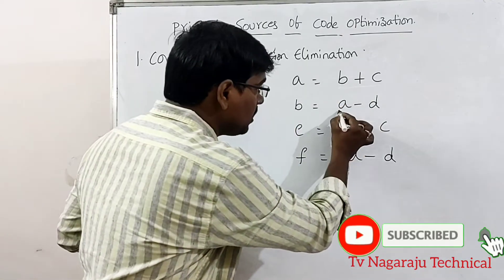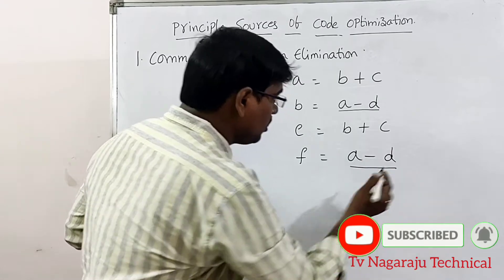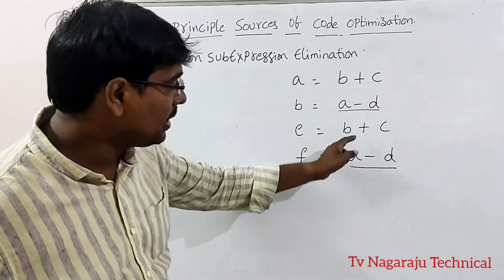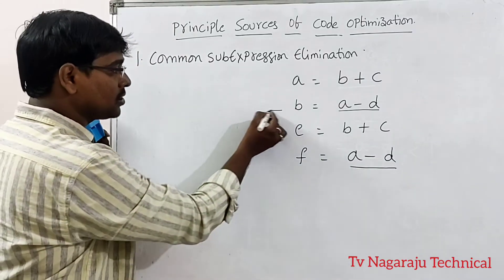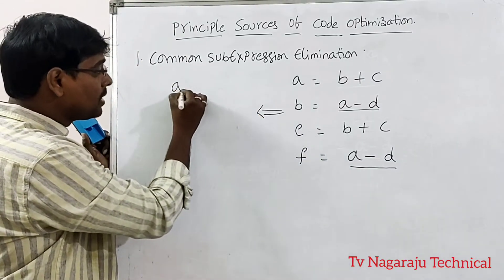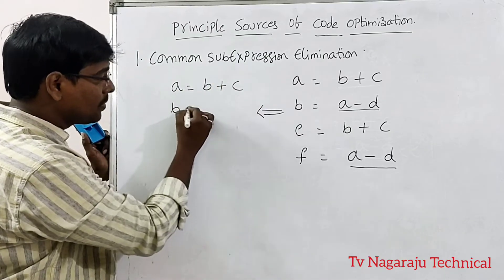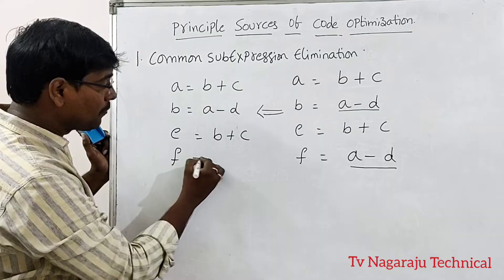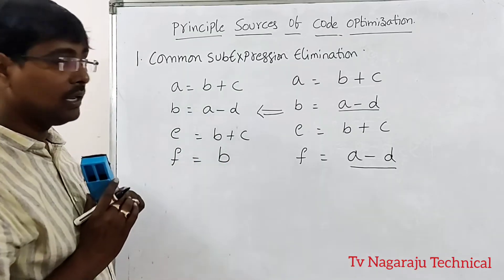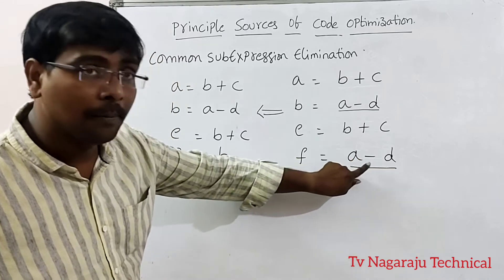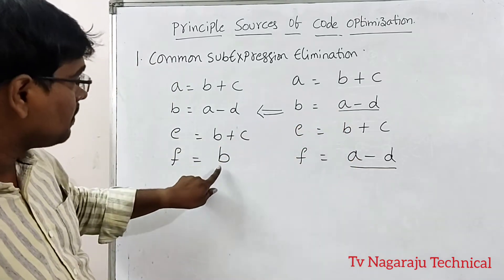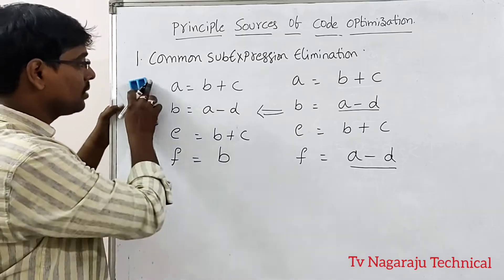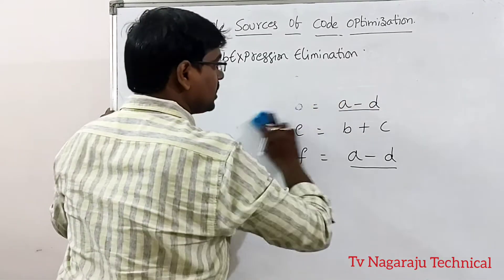Observe a - d here and also a - d further on. From the first to the second statement, the values of a and d are not updated, so this is a common sub-expression. The optimized code becomes: a = b + c, b = b + c, and f = b only. Instead of recomputing, the already-computed value stored in b is simply assigned. That is common sub-expression elimination.